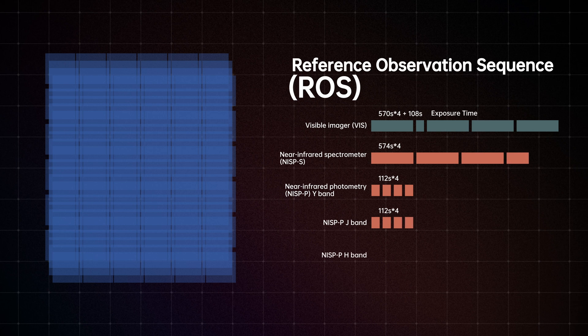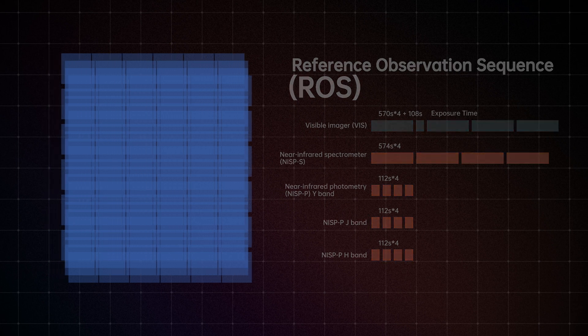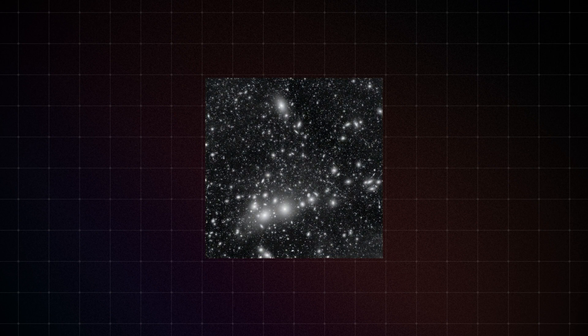For each pointing, the VIS instrument has an exposure time of 10 minutes, which makes it 40 minutes in total. While the NISP instrument operates simultaneously to capture slitless spectroscopy and photometry in different bands. Each ROSE will capture more than 100,000 galaxies within the Euclid field of view. This ROSE strategy is also used when Euclid surveys the sky, producing visible images and near-infrared images.